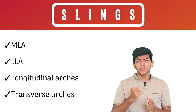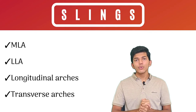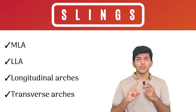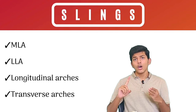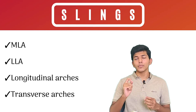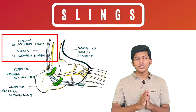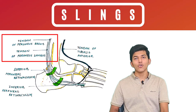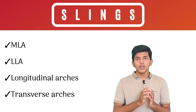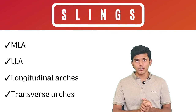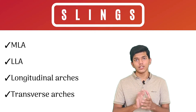To pull up the summit, slings are the structures responsible. For the medial longitudinal arch, three tendons — the tendon of flexor digitorum, flexor hallucis longus, and tibialis posterior — together pull the summit. For the lateral longitudinal arch, peroneus brevis and peroneus longus are responsible. For the transverse arches, peroneus longus and tibialis posterior run across the sole and help pull up the summit.